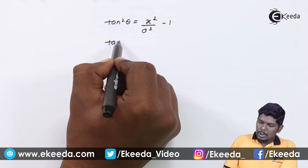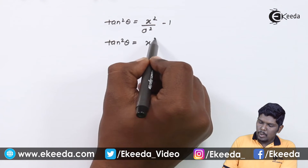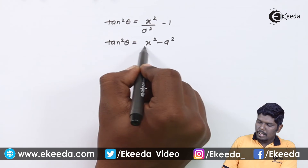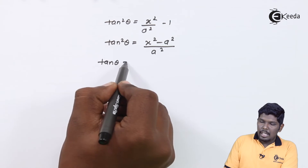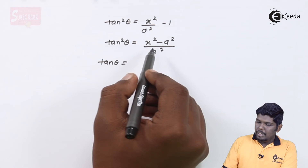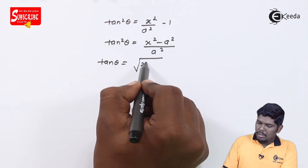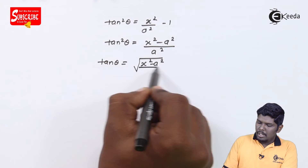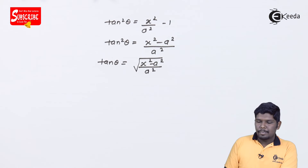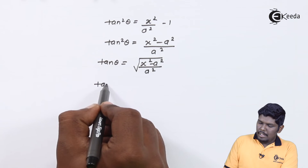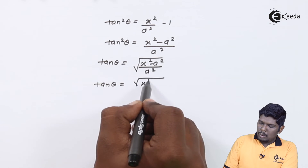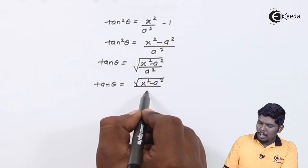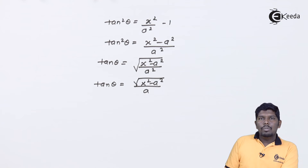Further, tan squared theta can be written as x squared minus a squared upon a squared. To get the value of tan theta we take the square root, giving under root of x squared minus a squared upon a squared. Therefore the final value of tan theta is under root of x squared minus a squared upon a. Now we have both sec theta and tan theta.